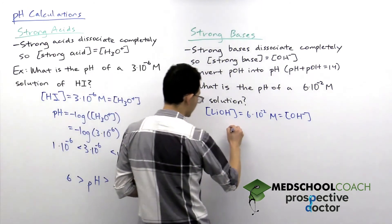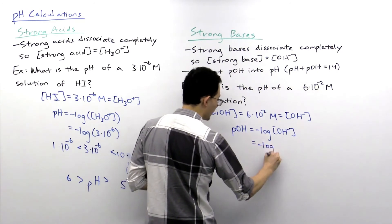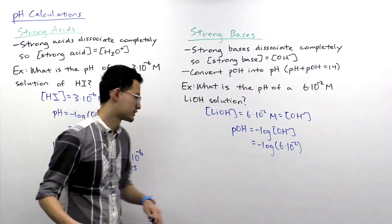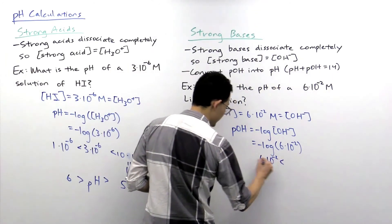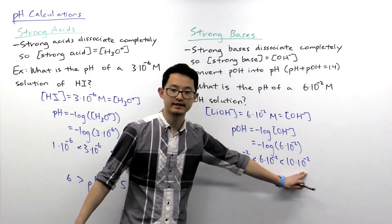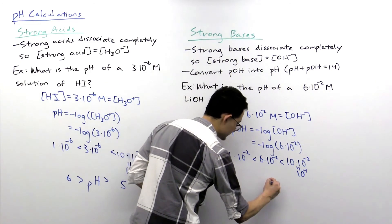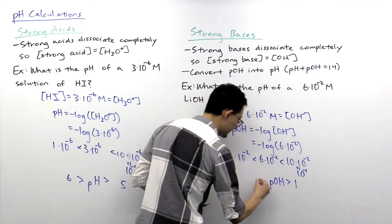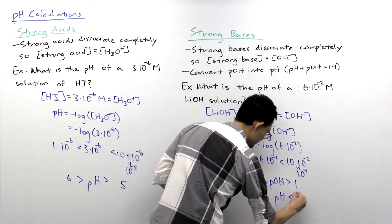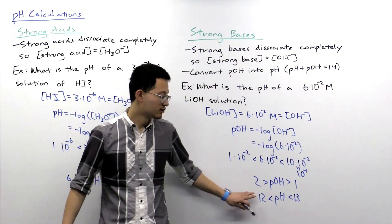Using this concentration, we can calculate the pOH: negative log of the hydroxide ion concentration, which is negative log of 6×10⁻². Again, this is difficult to calculate directly, but we can make a simple approximation. 6×10⁻² is between 1×10⁻² and 10×10⁻², which in scientific notation is 10⁻¹. So our pOH is between 1 and 2. Converting to pH using pH + pOH = 14: if pOH is 1 then pH is 13, and if pOH is 2 then pH is 12. So the pH is between 12 and 13.